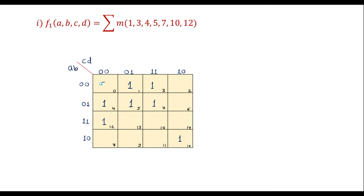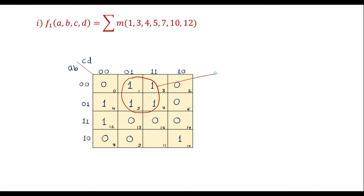The remaining cells are filled with zeros. Now we will try to simplify. Cells 1, 3, 5, and 7 all have 1s, so we can form a quad with these four cells. The product term for this quad is determined by looking at columns — the common factor is D — and looking at rows, the common factor is 0, giving A̅. So this quad gives the term A̅D.